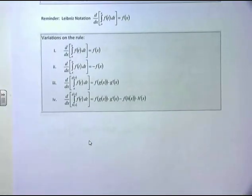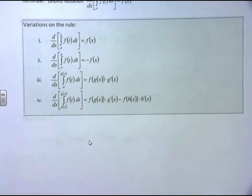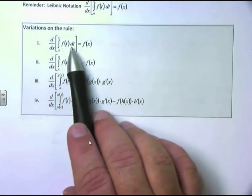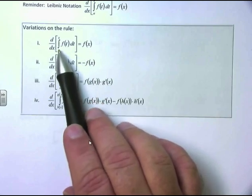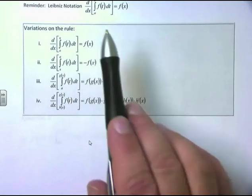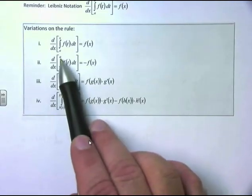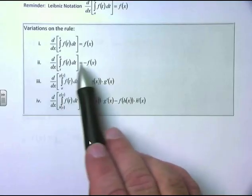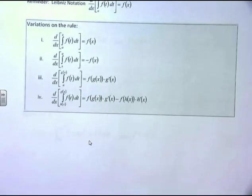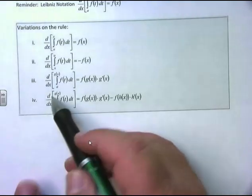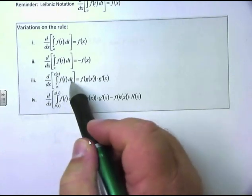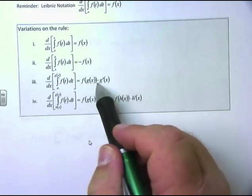There's more calculus involved, so you have to work on the variations of the rules. The first: the derivative of the integral from A to x of f(t)dt — the x variable is on the top bound and A is a constant on the bottom — so the derivative is just f(x). But if you switch the bounds, when the variable is on the bottom, the answer is negative. The derivative of the integral from A to a function g(x) of f(t)dt equals f(g(x)) times g'(x).